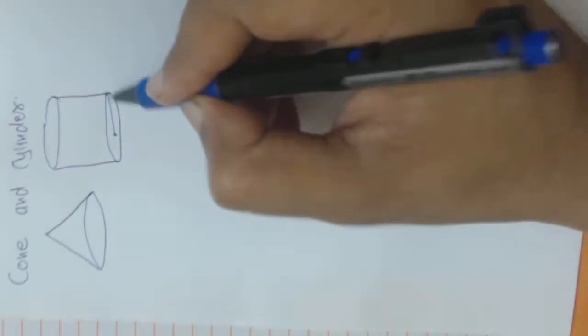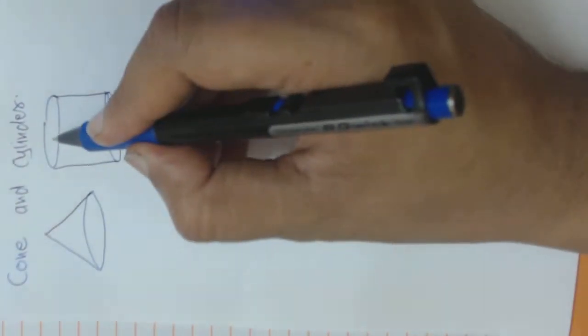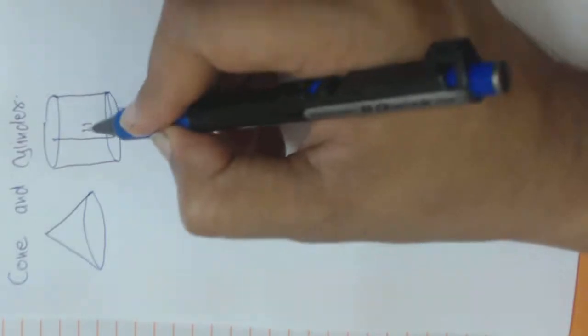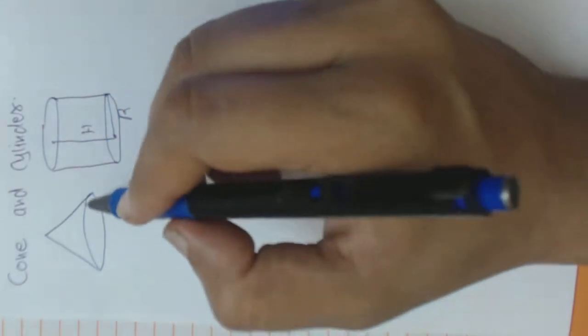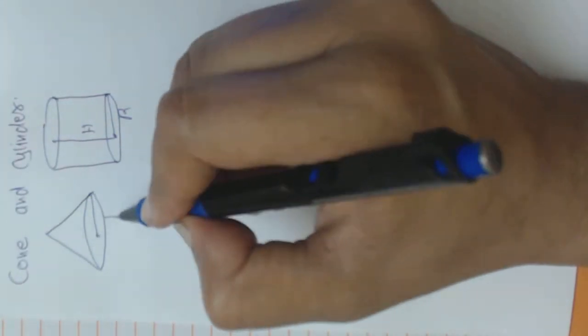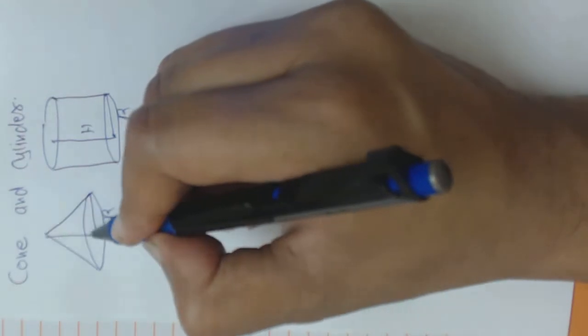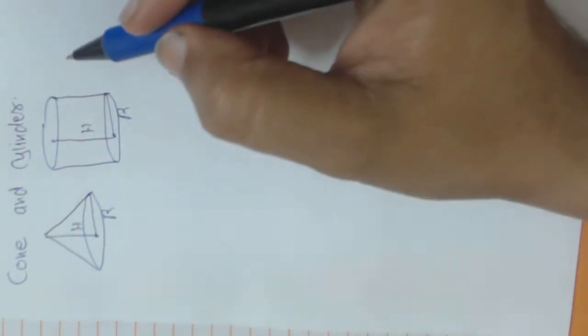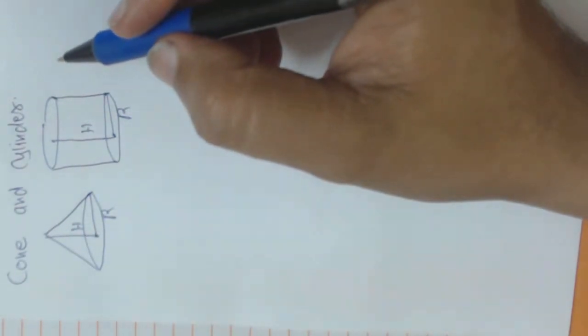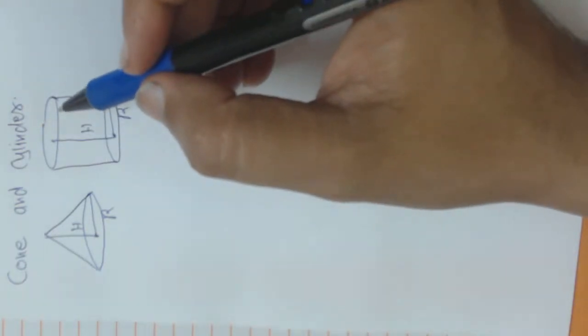This is the radius and this is the height of the cylinder. This is the radius and height of the cone. Today I am going to take the combination of these two.